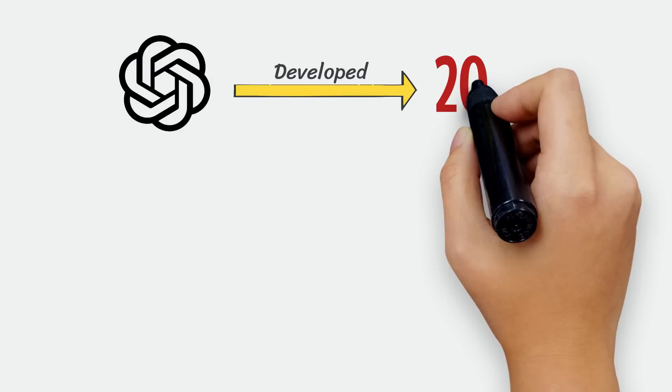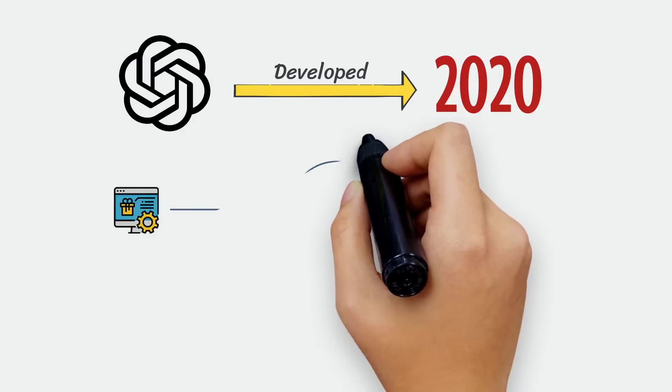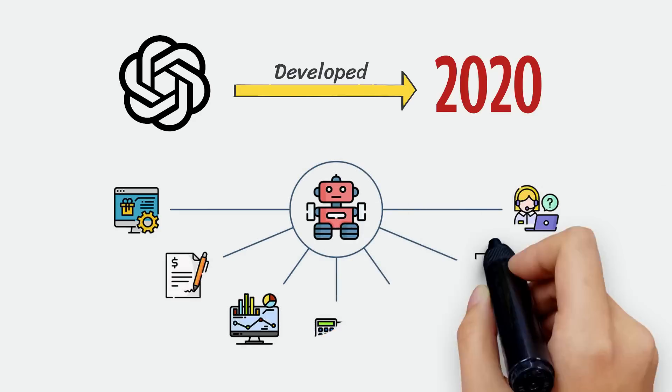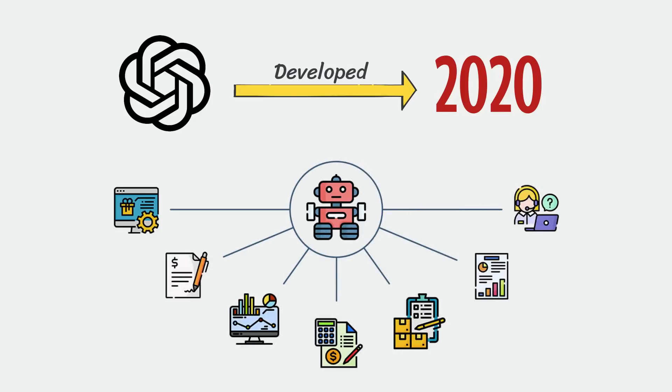So, OpenAI developed ChatGPT in the year 2020 with the aim of helping businesses automate repetitive tasks and streamline their operations and have a human conversation with you as a good friend.